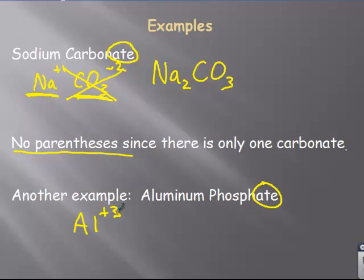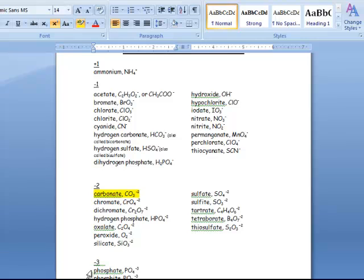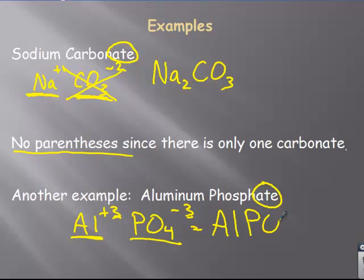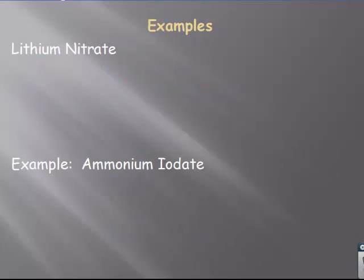So, again, we need our polyatomic ion list. Phosphate. Here's phosphate right down here. Phosphate is PO4 with a minus three charge. So, PO4 with a minus three charge. Remember, half and half, positive and negative. Charges are already balanced. And so, this is just AlPO4.